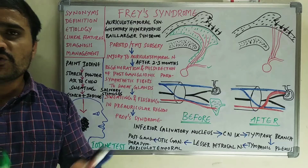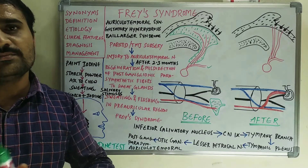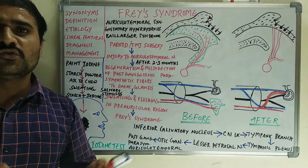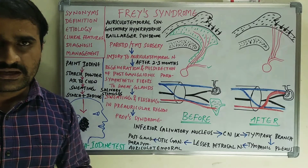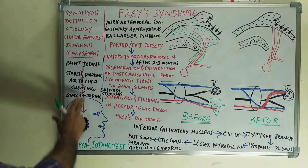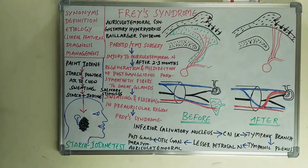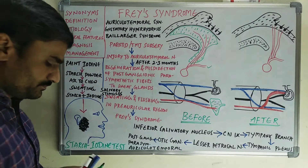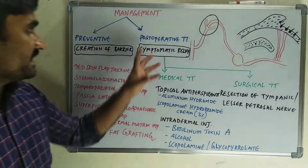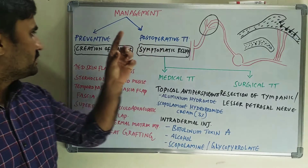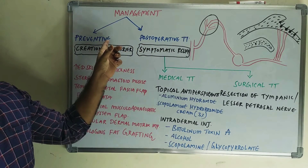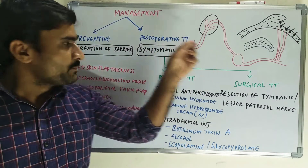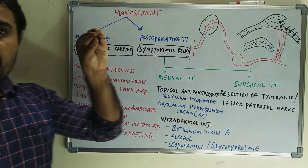The reacted area produces bluish to black spots, which is indicative of Frey's syndrome. If there are no spots, that means it is negative and there is no Frey's syndrome.